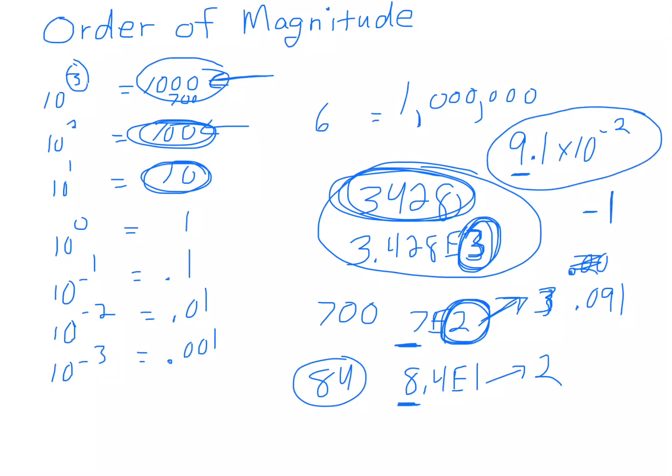And this is not closer to 0.01. It's closer to actually 0.1. So instead of a negative 2 order of magnitude, it'd be a negative 1. You'd have to bump that up one more.